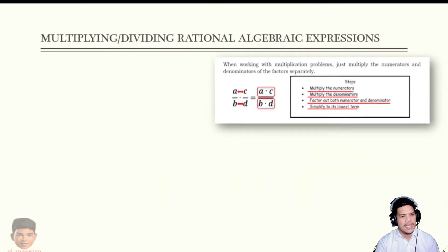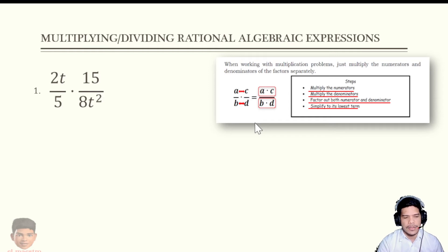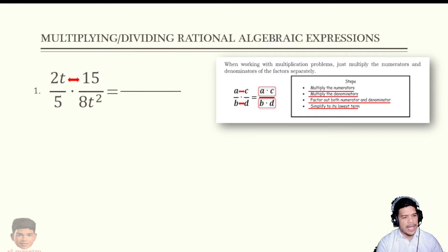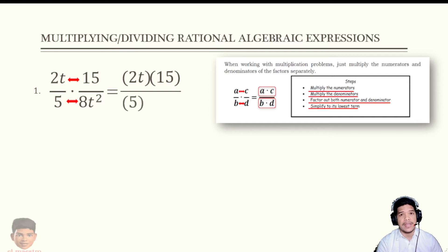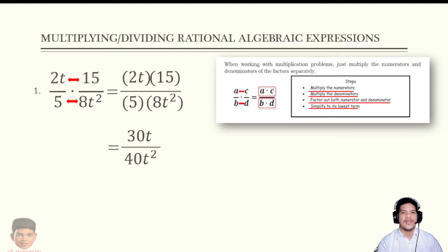So first example: we have 2t over 5, times 15 over t squared. The dot here signifies multiplication; sometimes an open and close parenthesis is used, so don't get confused. Multiply numerator to numerator: 2 times 15 equals 30t. Denominator to denominator: 5 times t squared — wait, that is 5 times the denominator. So 2 times 15 equals 30t, and 5 times 8 equals 40t squared.